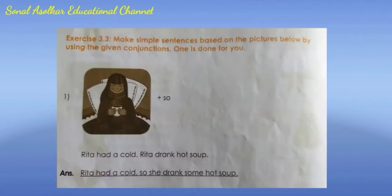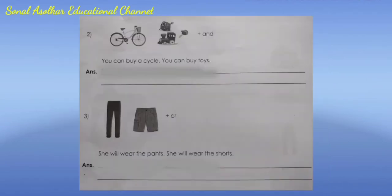Exercise 3.3 - Make simple sentences based on the pictures below by using the given conjunctions. 1) Rita had a cold. Rita drank hot soup. Answer: Rita had a cold so she drank some hot soup. 2) You can buy a cycle. You can buy toys. Answer: You can buy a cycle and some toys.